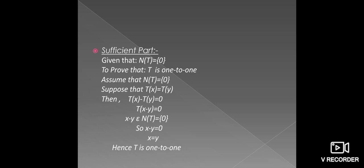Now, see the sufficient part. Given that N(T) equals the singleton set {0}, we have to prove T is one-to-one. For T to be one-to-one, take any two vectors such that T of X equals T of Y. Then T of X minus T of Y equals 0, which means X minus Y belongs to the null space of T. Since the null space of T equals {0}, then X minus Y equals 0, which implies X equals Y. Hence T is one-to-one. We have proved this lemma.